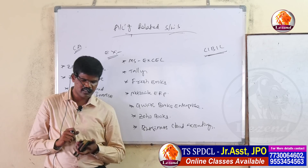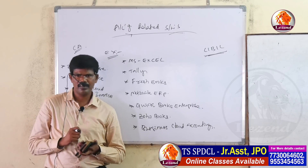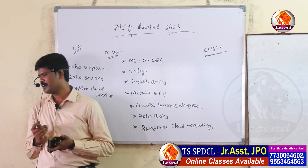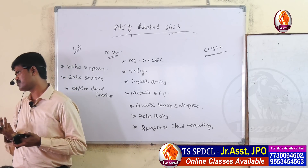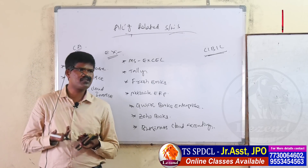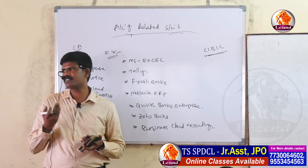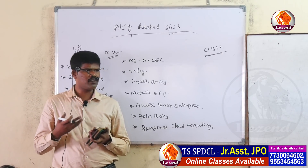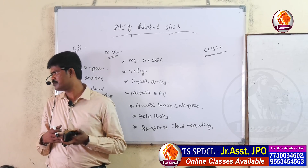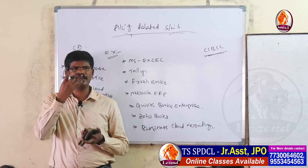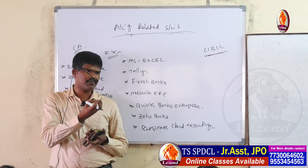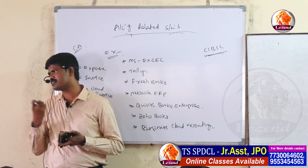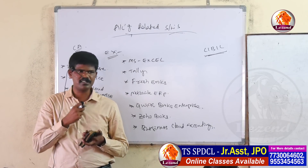The second point is cost savings. General accounting is manual — it is a time-taking process. Through computer, we can reduce the accounting time. Reducing accounting time is automatically cost saving. Time saving is automatically cost saving. That is the cost saving process, and it also supports easy maintenance.